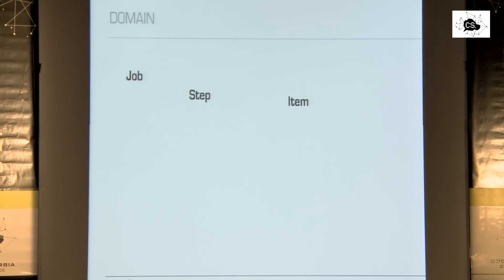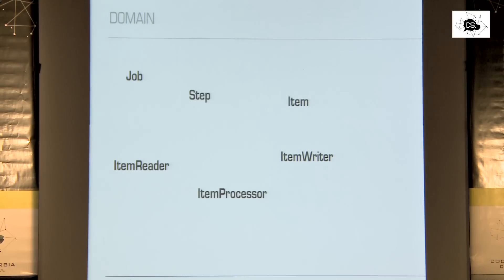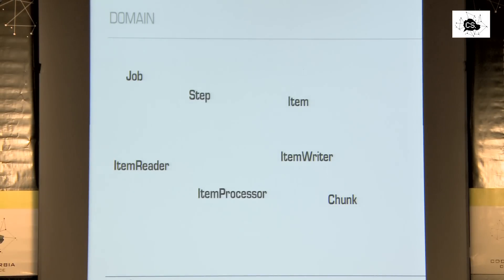We have the item reader, which is the component that reads items from any source — a database, a queue, anything. We have the item processor that does the processing — it gets the item from the item reader and can do something with it. Then it gives the item to the item writer, which is responsible for writing this item to any data source you want. And one more important noun is chunk. SpringBatch takes over transaction management, so you can define how many items you want in one transaction — the chunk is a bundle of all items that are processed in one transaction.